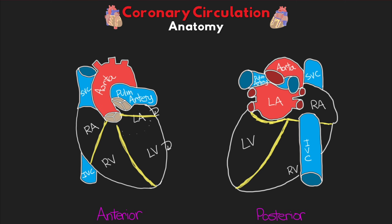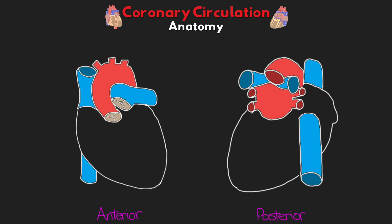Looking at the anterior view, we have the anterior and anterior lateral wall, the apex down here, and the inferior wall. On the posterior view, we have the anterior lateral and inferior wall on the posterior side of the heart, with the apex and inferior wall again visible down below. Now that we have those major structures identified, let's begin to talk about our coronary arteries.